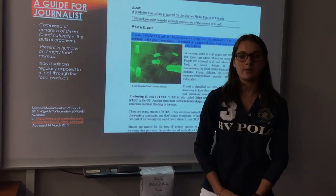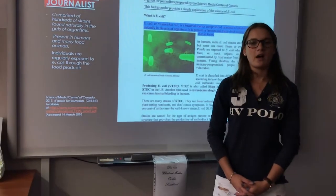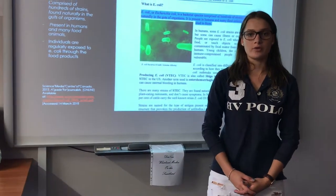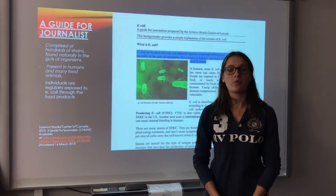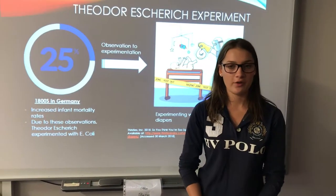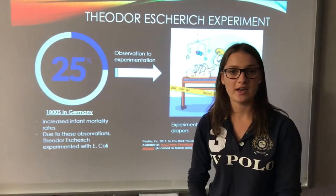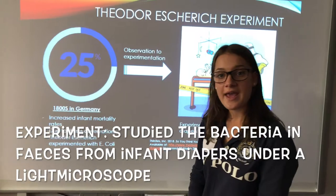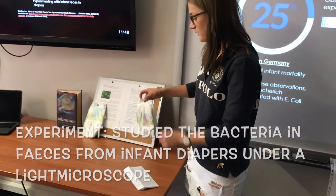Now that we know what E. coli is, we can understand what experiment Theodore Estridge conducted. During the 1800s, it was evident that there was a high increase of infant mortality rates, often reaching over 25%. Due to these observations, the scientist began to commence his investigation into understanding why so many infants were dying in mass.